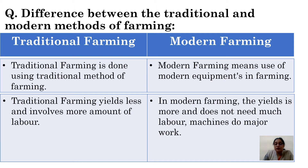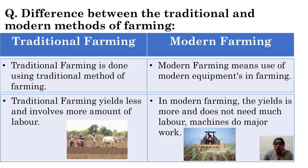And in modern farming, as I told you earlier, the yield is more, fewer people are used, and most of the work is done by machines. You can also see pictures of both methods — this is the traditional method and this is the modern method.